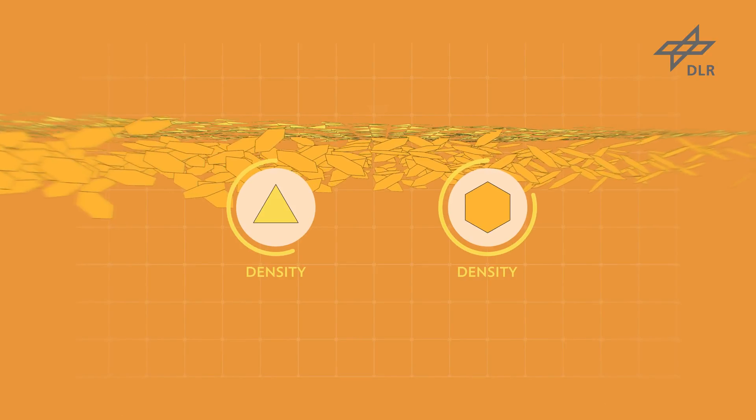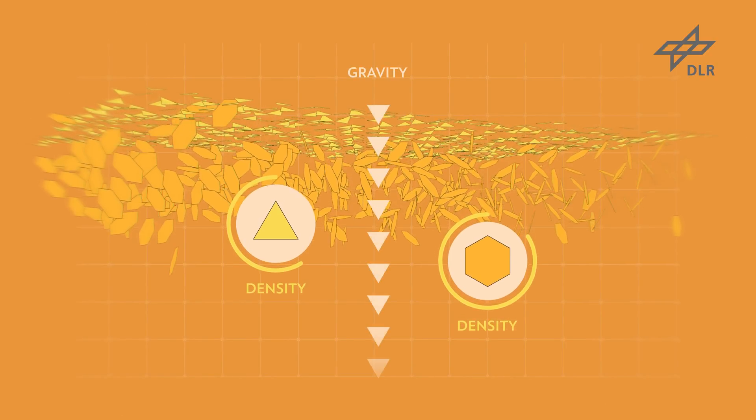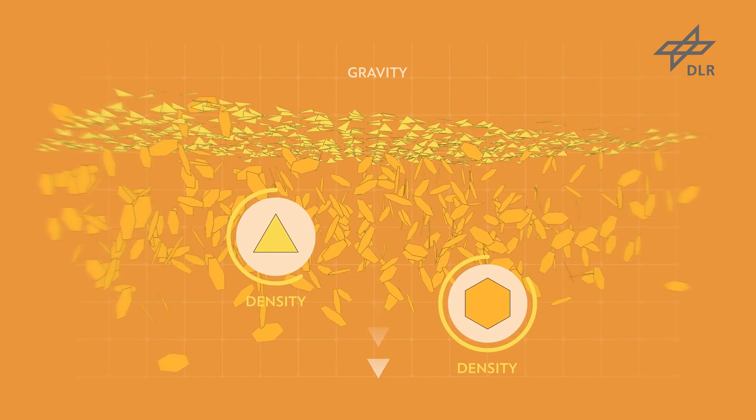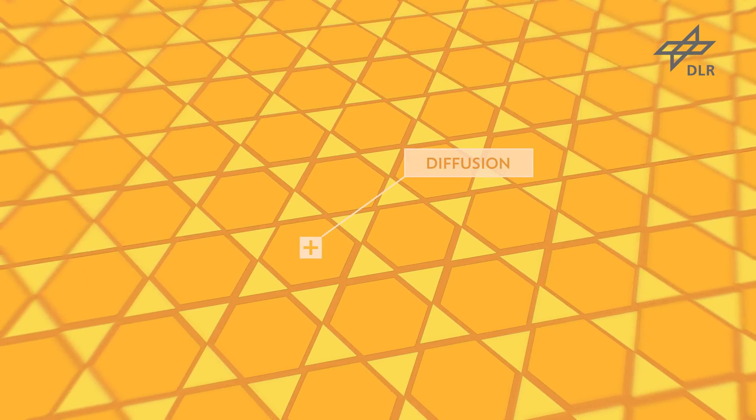As an alloy contains materials with different densities, gravity affects the solidification process by causing the denser material to sink. But when there is no gravity, the only thing affecting the mixing process is diffusion, the random motion of the molecules.